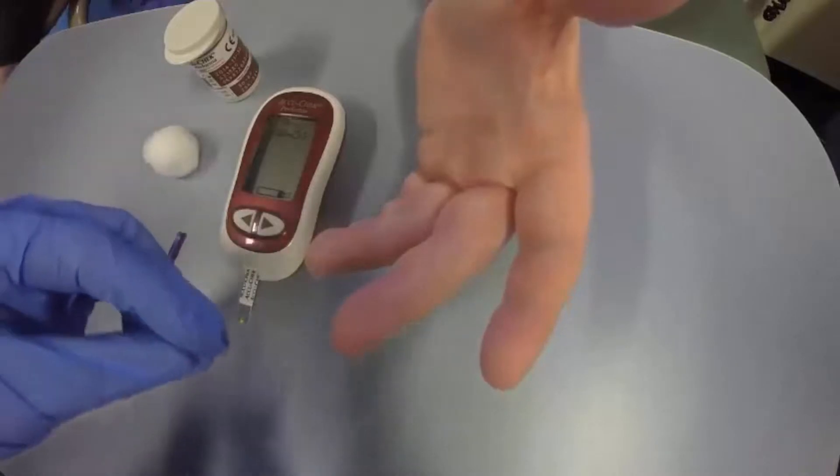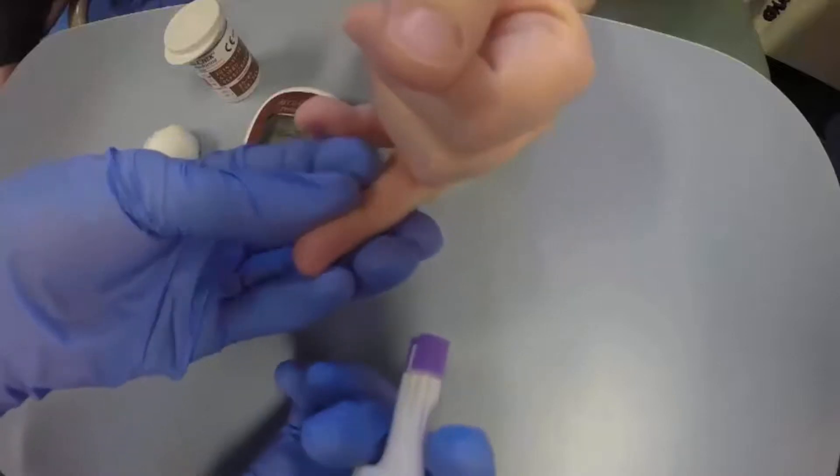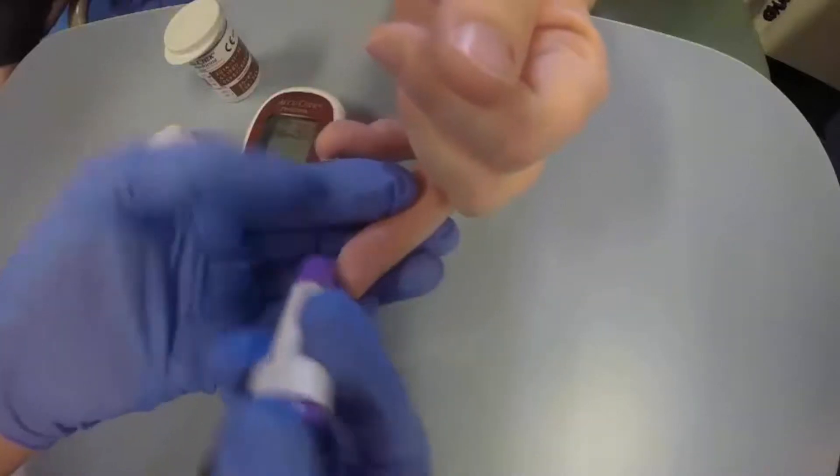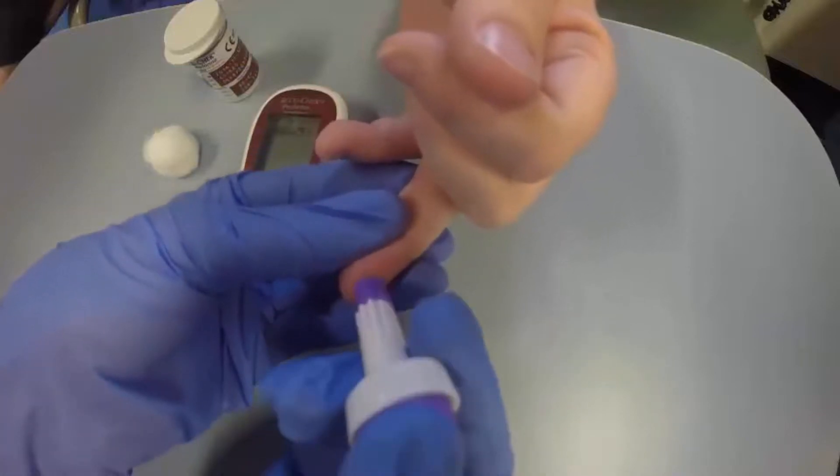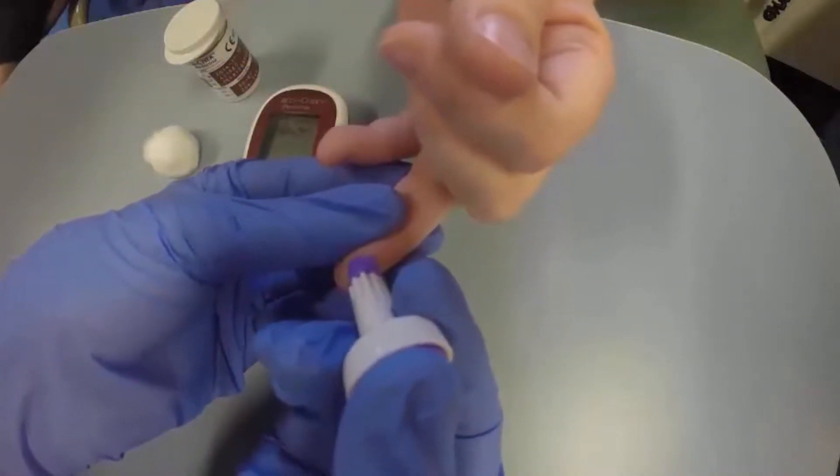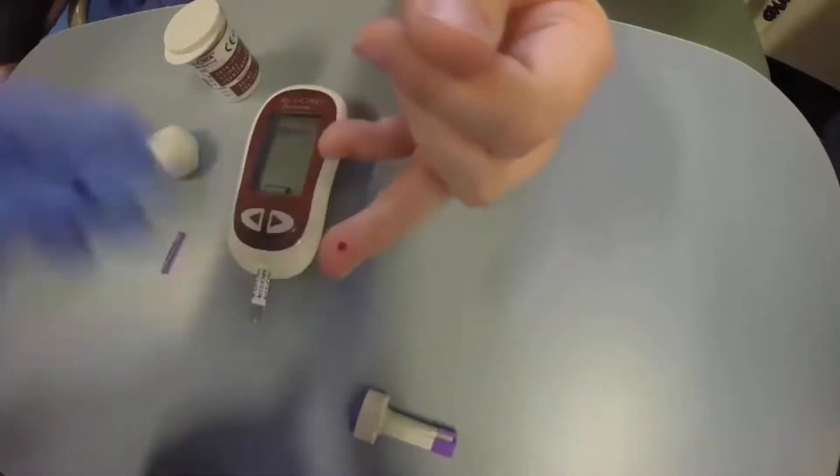Place the lancet over the finger that your patient usually requests. On the outside of the finger, away from the finger pad, place the lancet and push gently into the patient's finger. A blood bleb will appear.